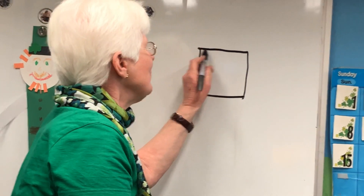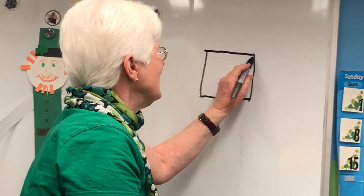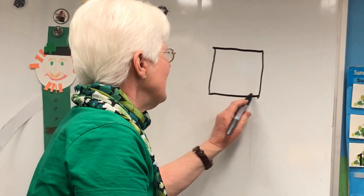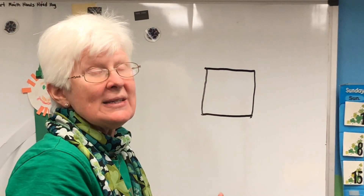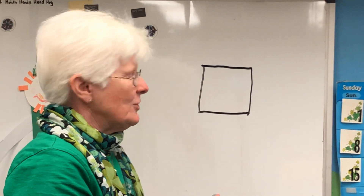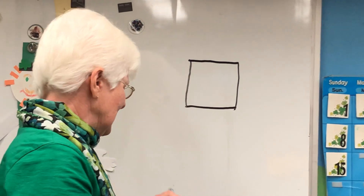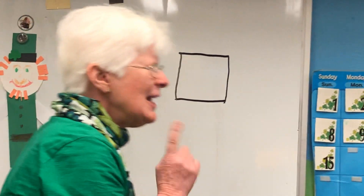Let's count: one, two, three, four. Four straight sides. No curves in a square.